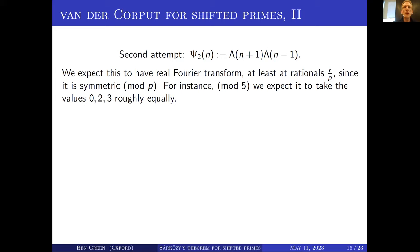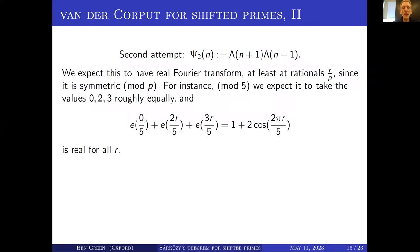For instance modulo 5, we would expect that function to be supported on the values 0, 2 and 3 modulo 5, roughly equally. So its Fourier transform should be something like a sum over these frequencies {0, 2, 3}, which is a real number — because the set of frequencies {0, 2, 3} is invariant under x ↦ −x. So at least at rationals, you expect it to have real Fourier transform.